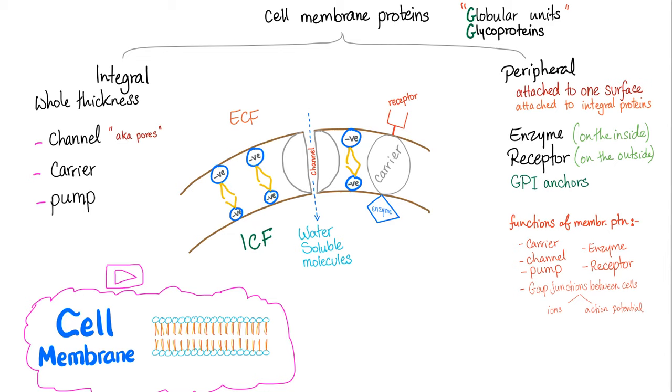Cell membrane proteins are divided into integral and peripheral. Integral takes the whole thickness of the cell membrane, peripheral just attached to one surface. Receptors are part of the peripheral proteins on the cell membrane. The great exception is something called the integrin groups of receptor proteins. They take the whole thickness, but they are a receptor nonetheless.